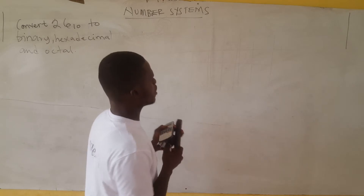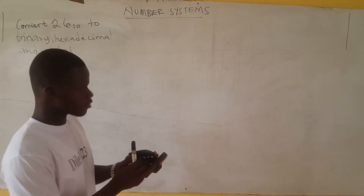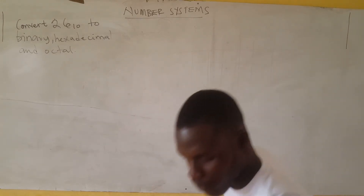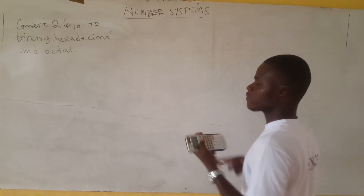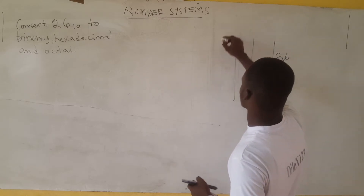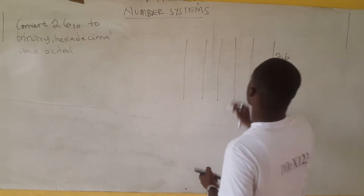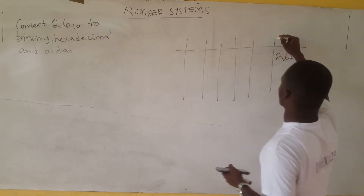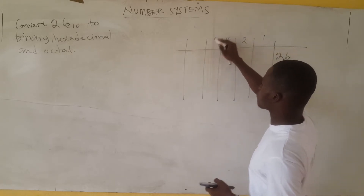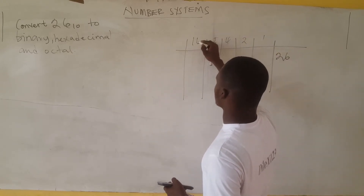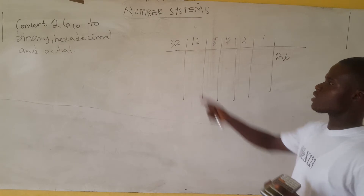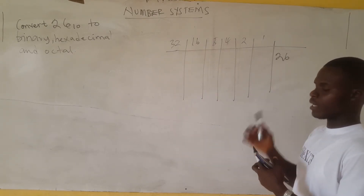So, 26 in base 10 — let's first convert it to binary, that's much easier to do. What we do is we start from 1, multiply 1 by 2, you get 2; times 2 is 4; times 2 is 8; times 2 is 16; times 2 is 32. Let's stop at 32, because 32 is bigger than 26, so we stop at 32.